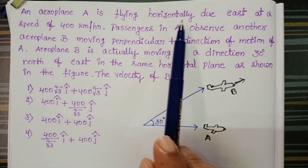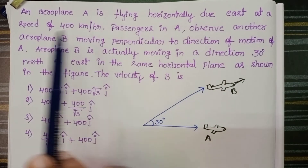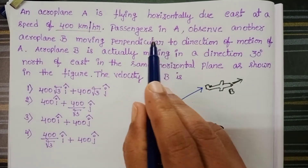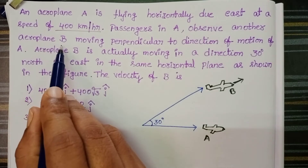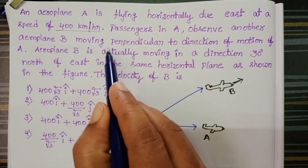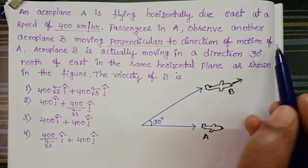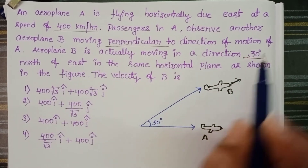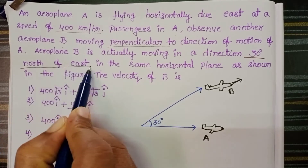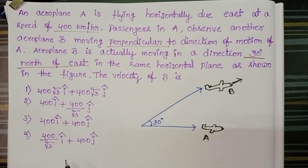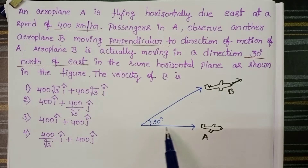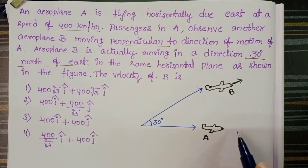An aeroplane A is flying horizontally due east at a speed of 400 km per hour. Passengers in A observe another aeroplane B moving perpendicular to the direction of motion of A. Aeroplane B is actually moving in a direction 30 degrees north of east in the same horizontal plane, as shown in the figure. We need to find the velocity of B.